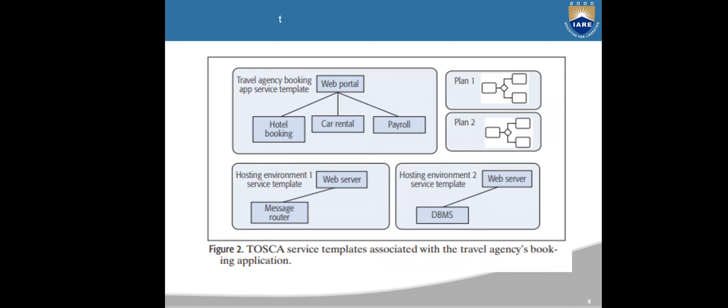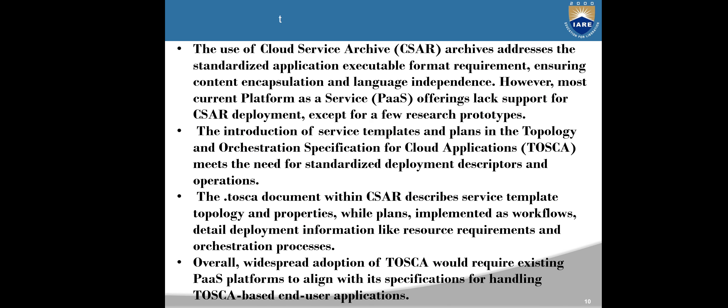Here is a diagram of TOSCA service templates associated with the travel agency booking application. As you can see, the Travel Agency Booking App service template has a web portal that branches into three: Hotel Booking, Car Rental, and Payroll. In the hosting environment, service template one contains a Web Server and Message Router, and service template two contains a Web Server and DBMS. There are also two plans: Plan One and Plan Two.